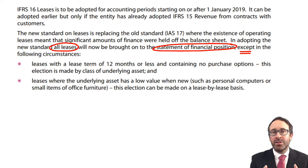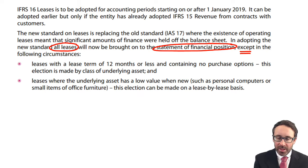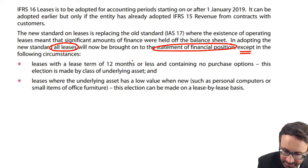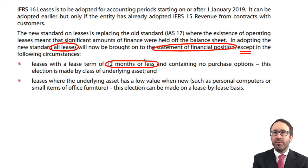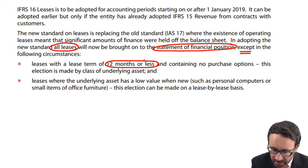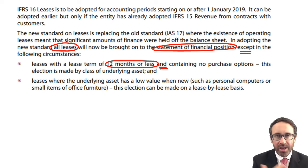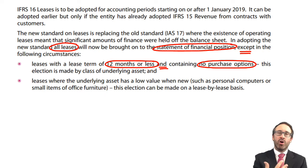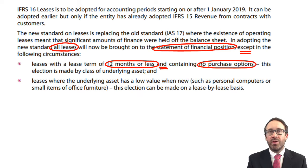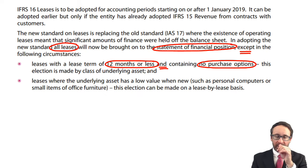However, there is an exception. Leases that won't be brought on to the balance sheet — i.e. those that don't recognise the asset and corresponding lease liability — are where the asset has a lease term of 12 months or less. These are short lease periods. There is also no purchase option; if there is an option to purchase at the end of the short lease period, it would be recognised on the statement of financial position as a standard lease.